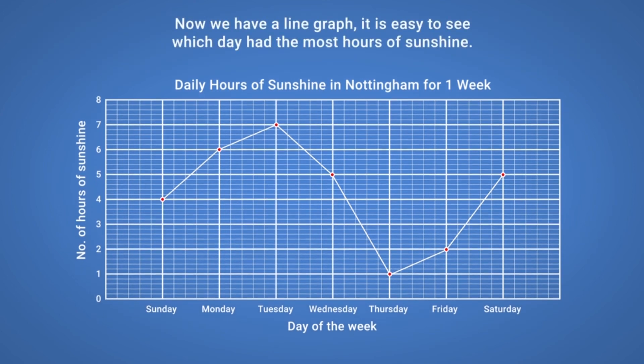Now we have a line graph, it is easy to see which day had the most hours of sunshine. Look along the line on the graph to find the highest number of hours. The highest number is 7, so follow down in a straight line from that point to the x-axis. The answer is Tuesday with 7 hours of sunshine.